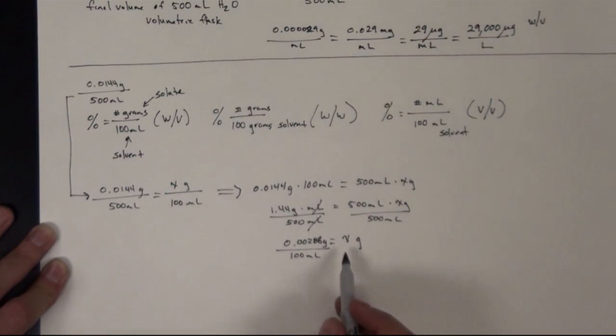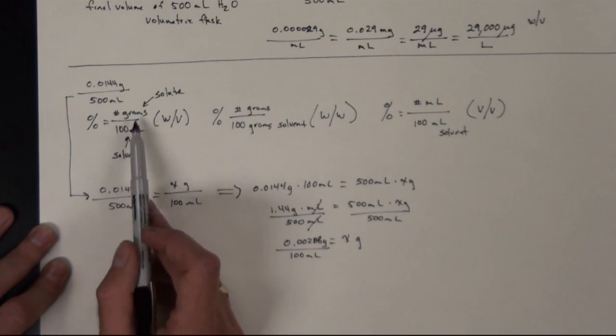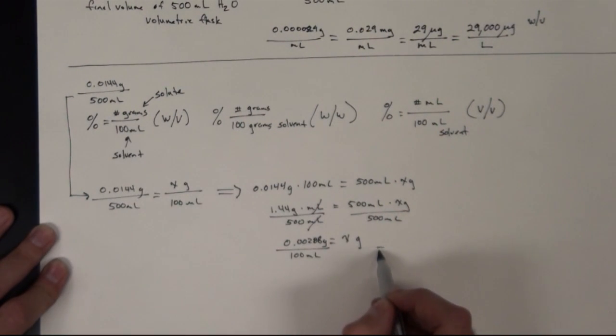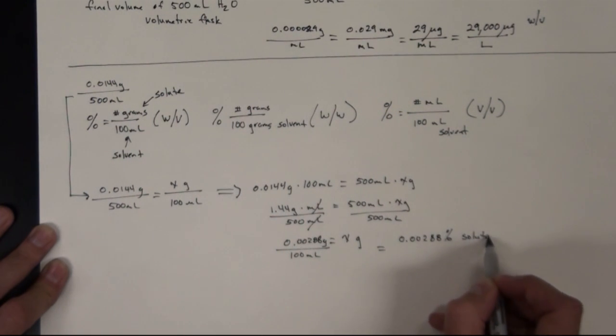0.00288 grams per 100 milliliters. So in terms of percentage, now if we go back to here, number of grams per 100 milliliters is the percentage, so this is a 0.00288 percent solution of bromophenol blue.